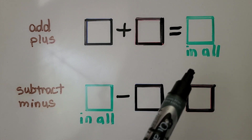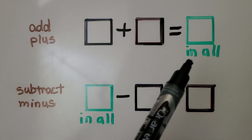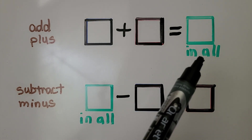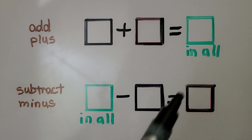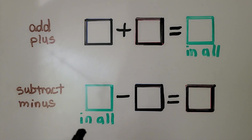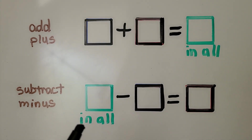So when we add, the number in all is over here. When we subtract and take away, the number in all is over here.